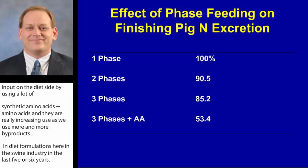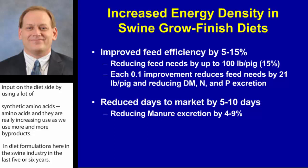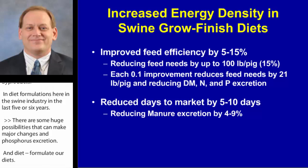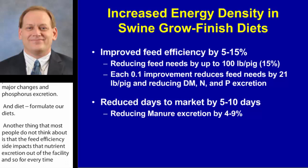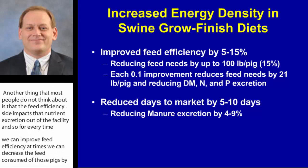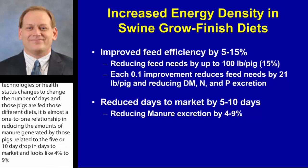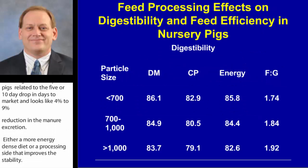Feed efficiency impacts nutrient excretion out of the facility. For every tenth improvement in feed efficiency, we can decrease the feed consumed by those pigs by 21 pounds and reduce the dry matter nitrogen and phosphorus excretion. Similarly, using technologies or health status changes that reduce the number of days pigs are fed those diets results in nearly a one-to-one relationship in reducing manure generated. A five to ten day drop in days to market equates to a four to nine percent reduction in manure excretion. A more energy-dense diet or processing that improves digestibility can also improve feed efficiency.